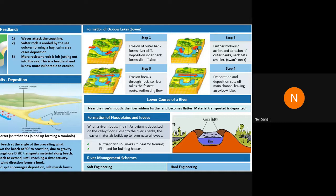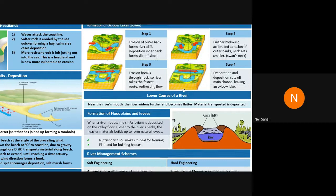Over time the meander bends tighten, with two outer bends moving toward each other, creating a swan's neck shape. During flood conditions, the river finds a new, faster route through — cutting across between the two bends. Once this new channel is eroded, the old meander is cut off and left behind as a horseshoe-shaped lake called an oxbow lake. This is another classic river feature found in the middle to lower section of the river profile.